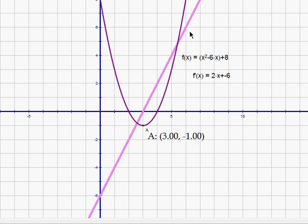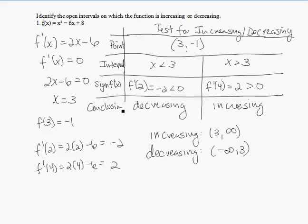Now I have the function graphed as well as its derivative — f prime of x is 2x minus 6. Notice that the derivative is negative to the left of positive 3, and the derivative is positive to the right of positive 3. Since the derivative is negative, the function is decreasing; a positive derivative gives an increasing function. At x = 3, the derivative is 0, and that is where the original function has a horizontal tangent. So using the derivative, we can make conclusions about the original function f.